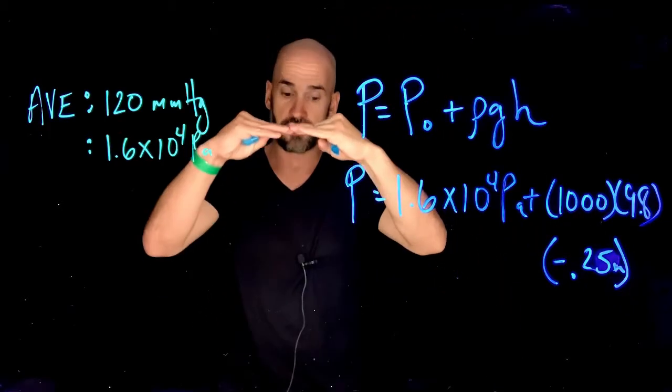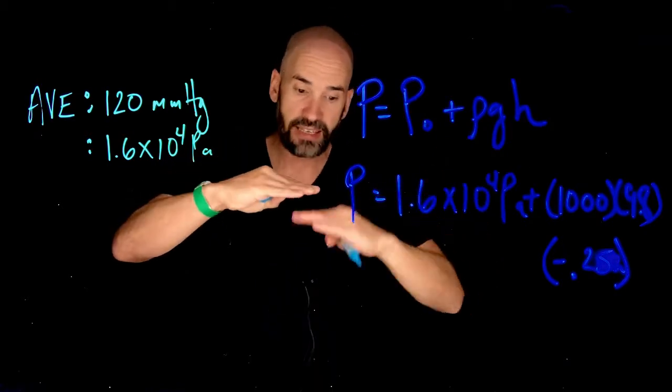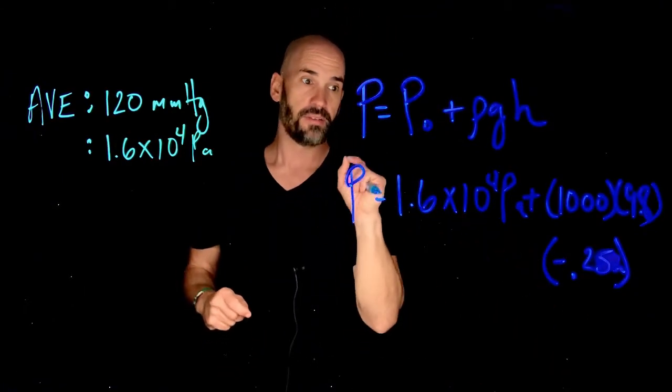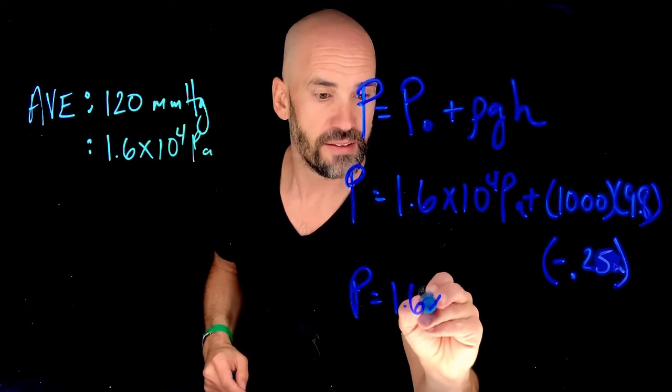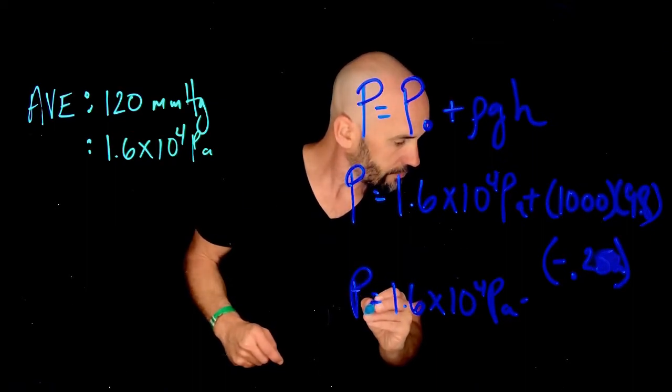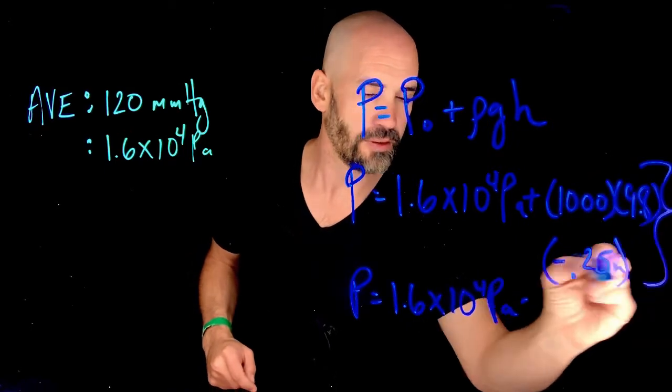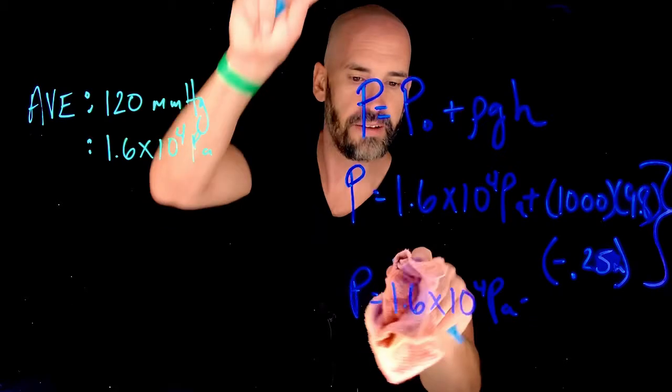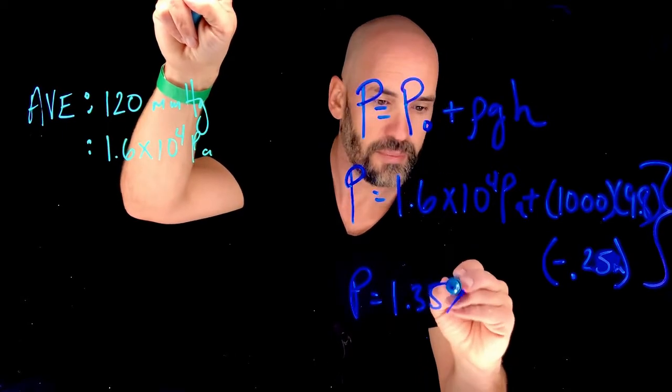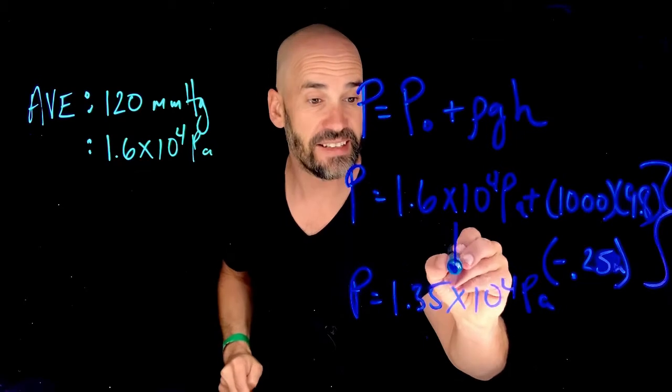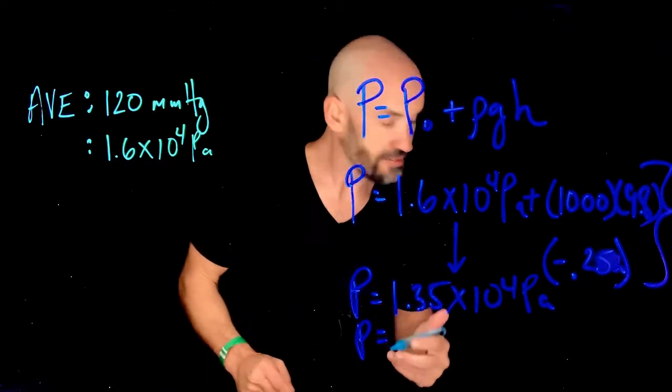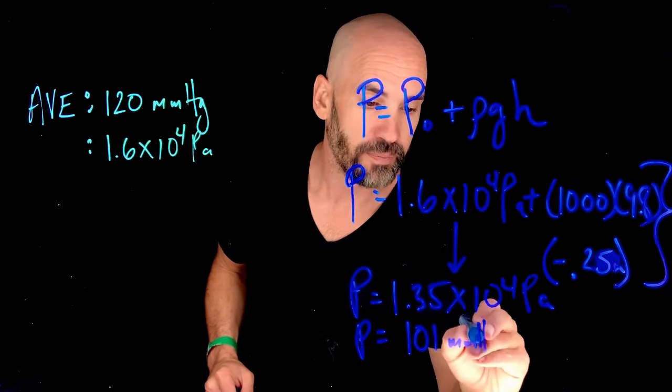Remember, normally this equation is when you're submerging underwater, finding the pressure as you get deeper, but I'm not getting deeper, I'm actually moving above, so that's the opposite direction. I have to put a negative there to compensate for that. So this is going to give me a pressure of 1.6 times 10 to the 4 pascals minus whatever the answer is to this. And I get a value in my solutions of 1.35 times 10 to the 4 pascals, which is obviously less than this, and if I convert that to millimeters of mercury, which is what blood pressure is actually measured in, I get 101 millimeters of mercury.